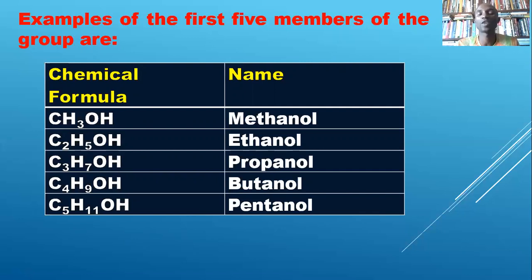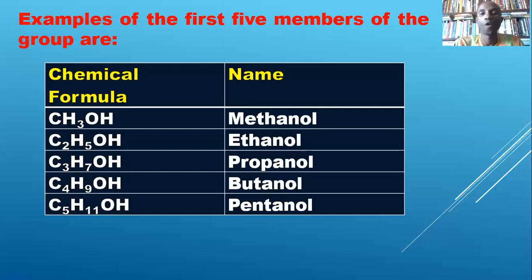You can list other members of the alkanols with their molecular formula. For example, instead of methane's CH4, you write CH3OH — one H is replaced by OH. That is the membership of the alkanol group.